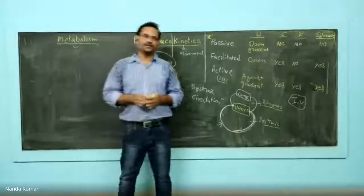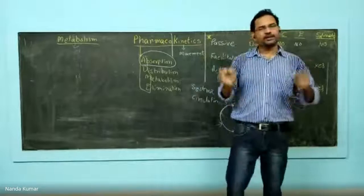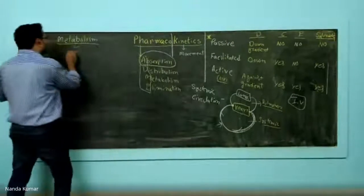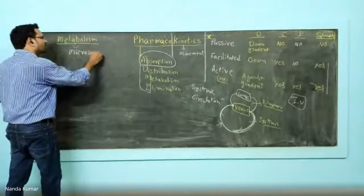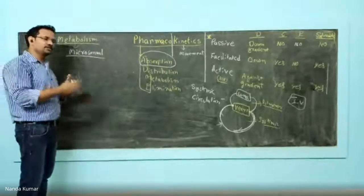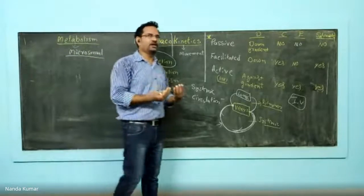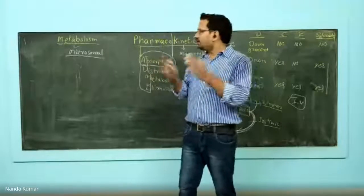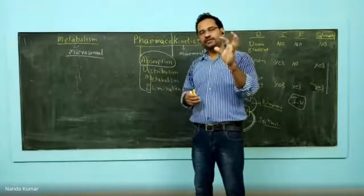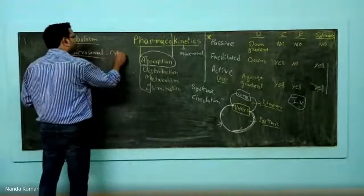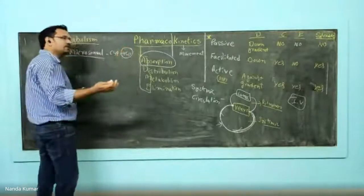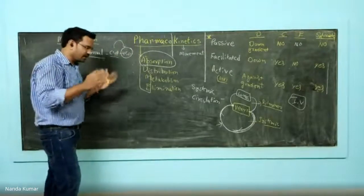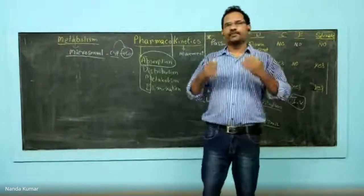The major site of metabolism in human beings is the liver. The liver has microsomal enzymes whose job is to metabolize xenobiotics as well as food and internal neurotransmitters. Inside the microsomes are organelles called microsomes containing a class of enzymes known as cytochrome P450. These are named because they absorb light at 450 nanometers. The job of this enzyme is to metabolize drugs.